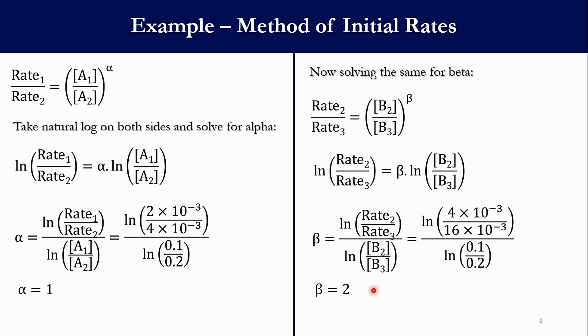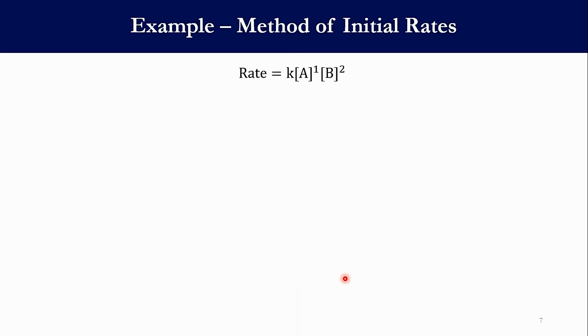So the system is first order with respect to species A, second order with respect to species B. What will be the overall order? Obviously it will be third order, because once you sum 1 and 2, obviously you get 3. So this is a third order system. So we get Rate = K[A]¹[B]².